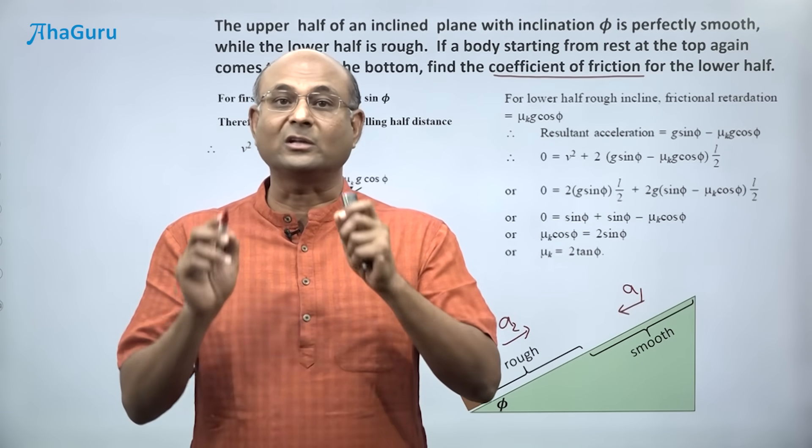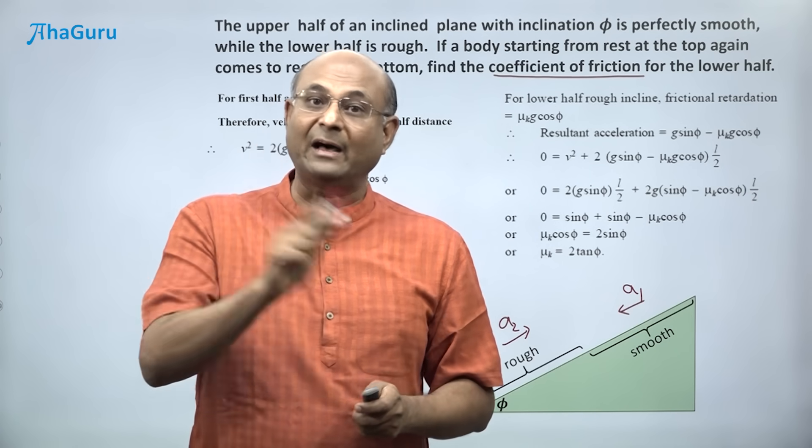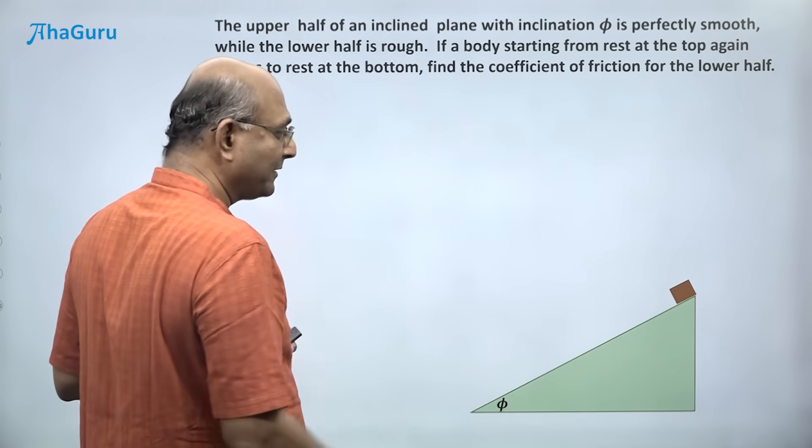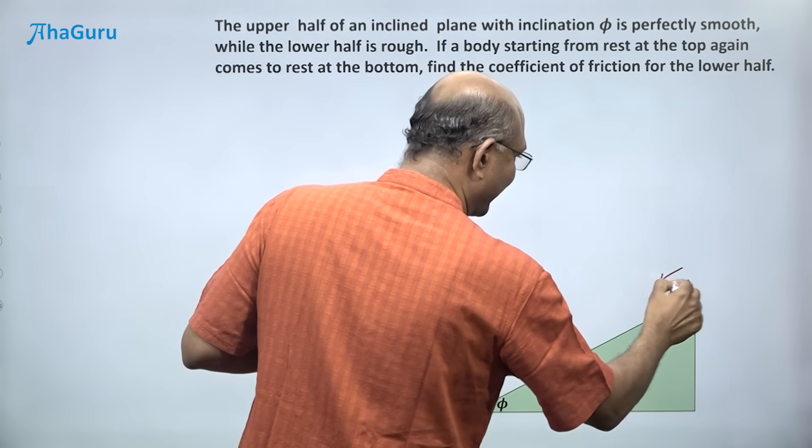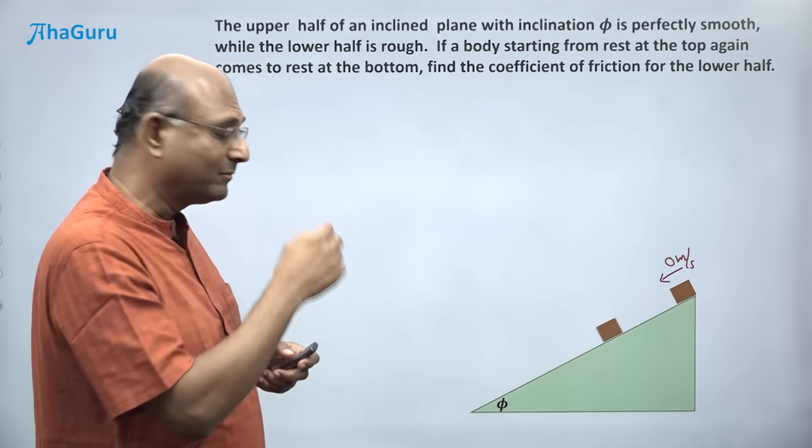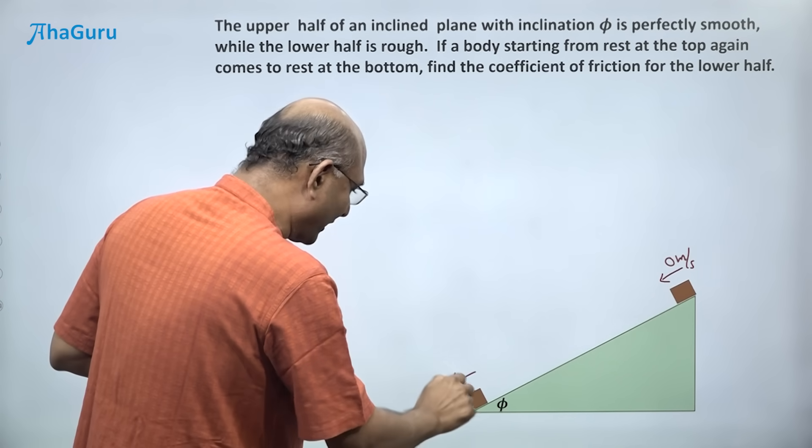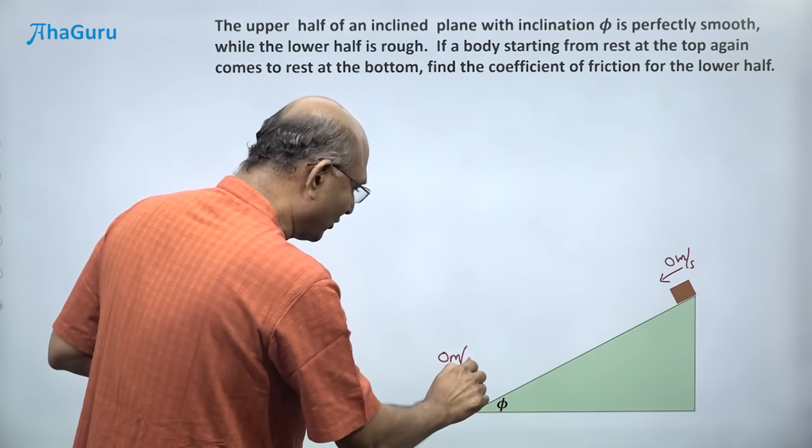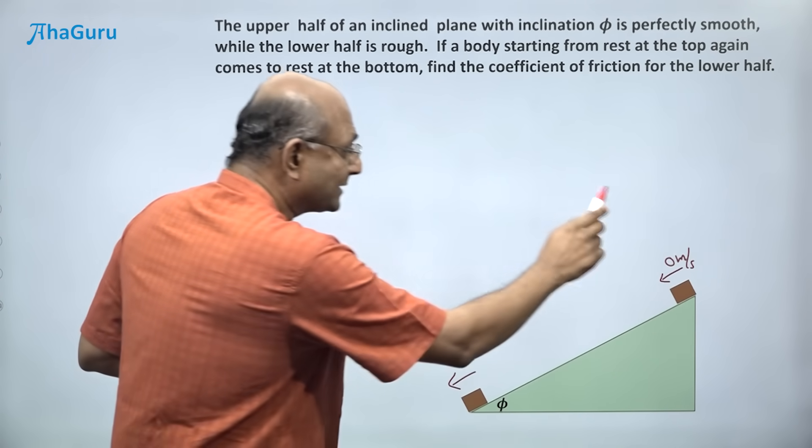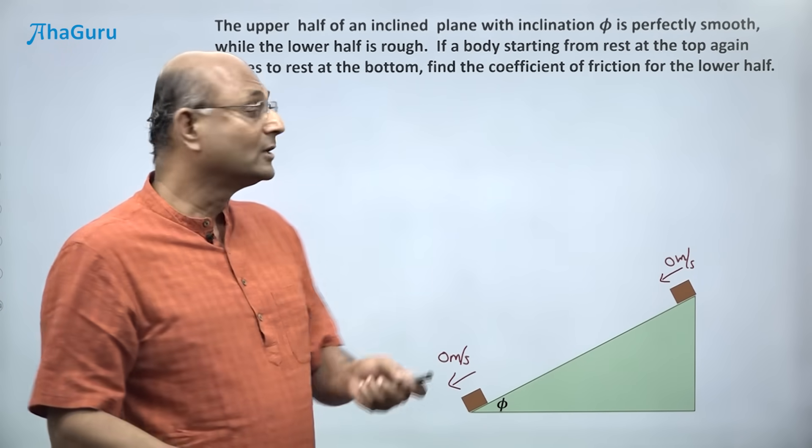But if you use the concept of energy, the same problem can be done in half a minute. Let us take a look. Here I have this block that starts from rest, so zero meters per second. It slides down. This is the rough portion, so it stops here. Therefore here also it has a velocity of zero meters per second. So what is the kinetic energy there? Zero. Kinetic energy here? Zero. So what is the change in kinetic energy? Zero.